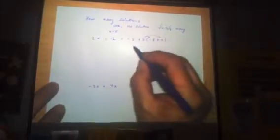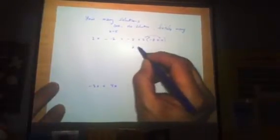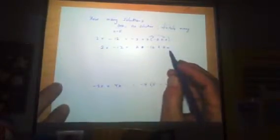On this question here, we go ahead and do our standard things. We distribute, we get 2 minus 16, because a positive times a negative, plus 2x. And on this side, it stays the same. 2x minus 12 equals 2 minus 16 plus 2x.